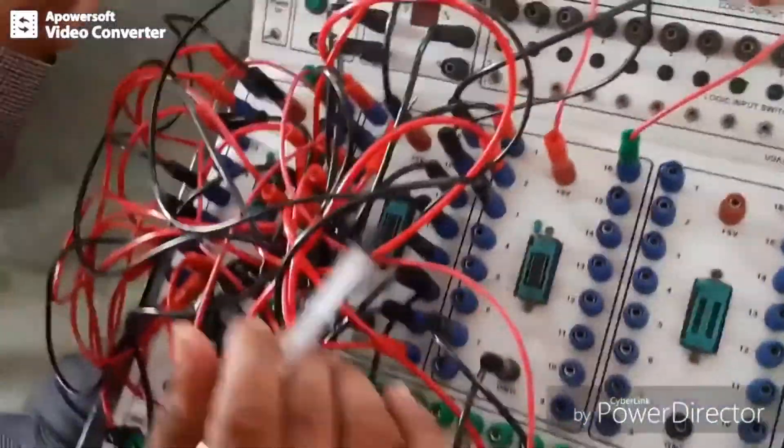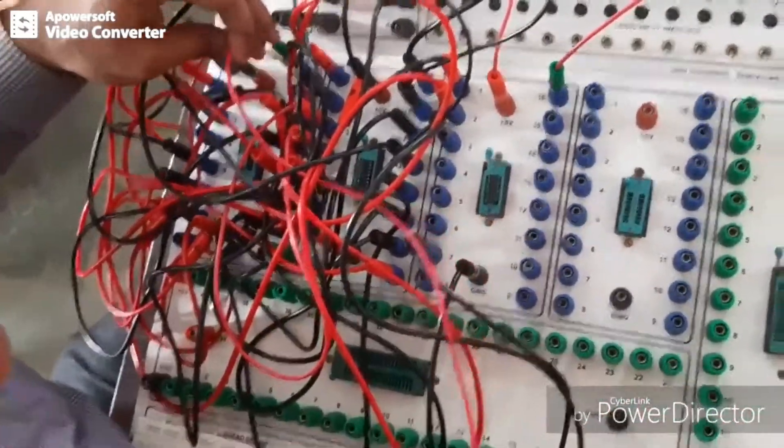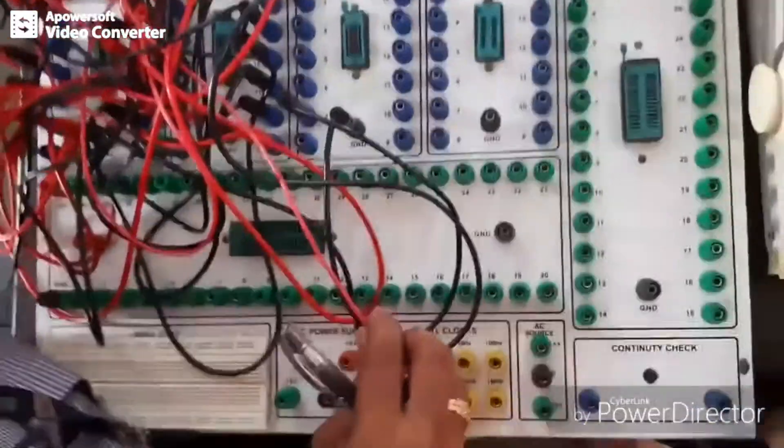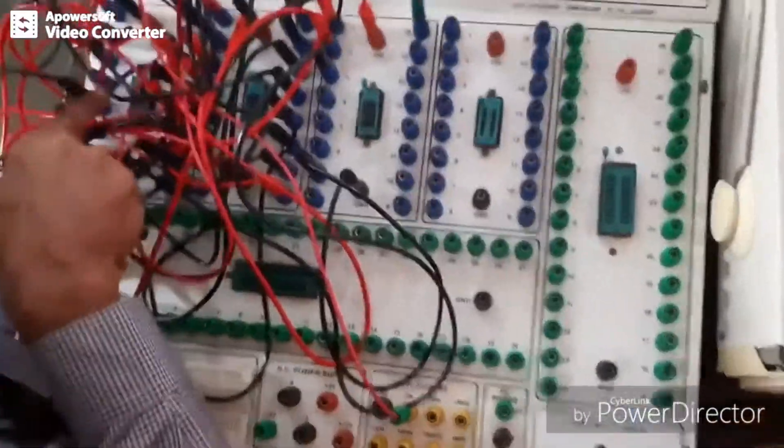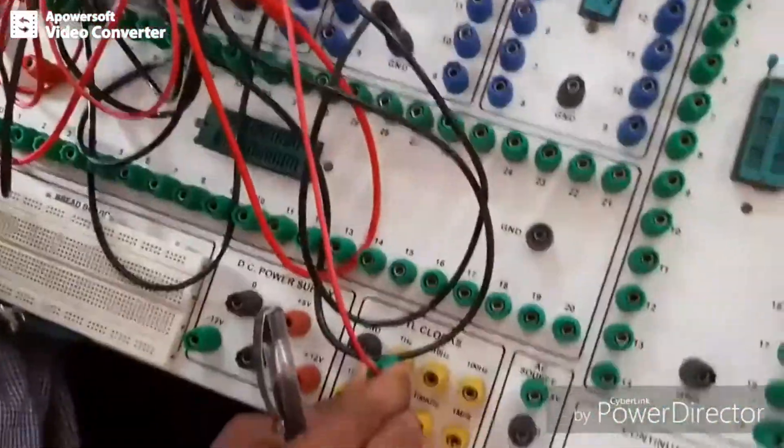So when you make the connection like this, you have to give the input by using clock signal. This is pin number 14 connected to clock. Pin number 14 of 7490 decade counter IC is connected to clock signal.